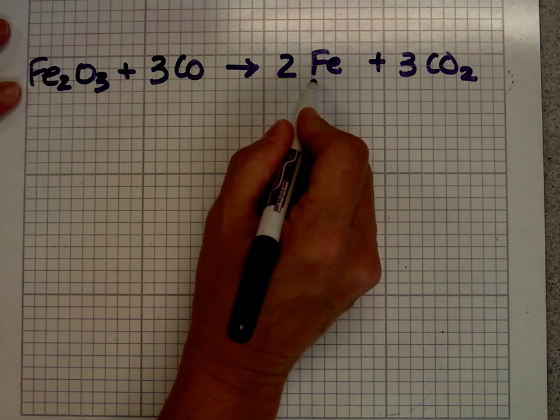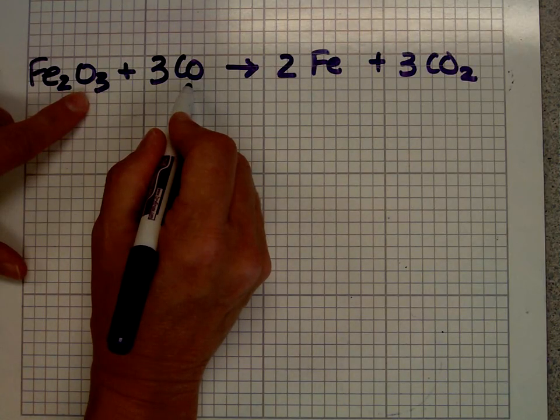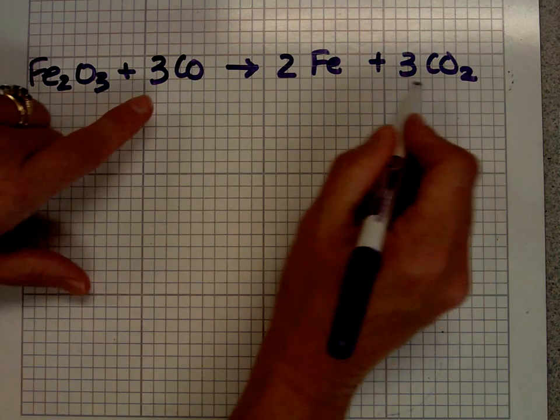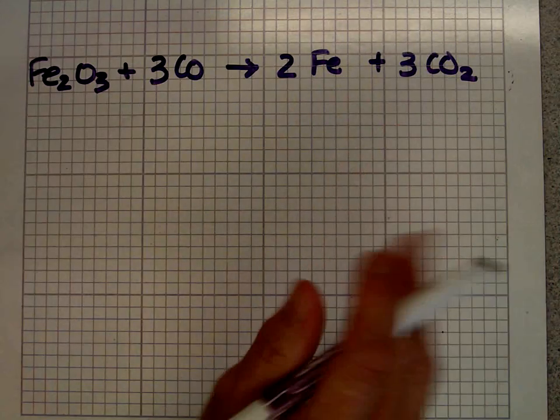2 irons, 2 irons, 3, 6 oxygens, 6 oxygens, and 3 carbons, 3 carbons, so I am balanced.